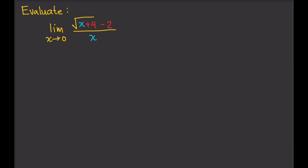The conjugate is almost the same thing as the numerator, but the sign between the terms is the opposite. So instead of square root of x plus 4 minus 2, you get square root of x plus 4 plus 2. You multiply both the numerator and the denominator by this conjugate — whatever you do with the numerator, you also do in the denominator.